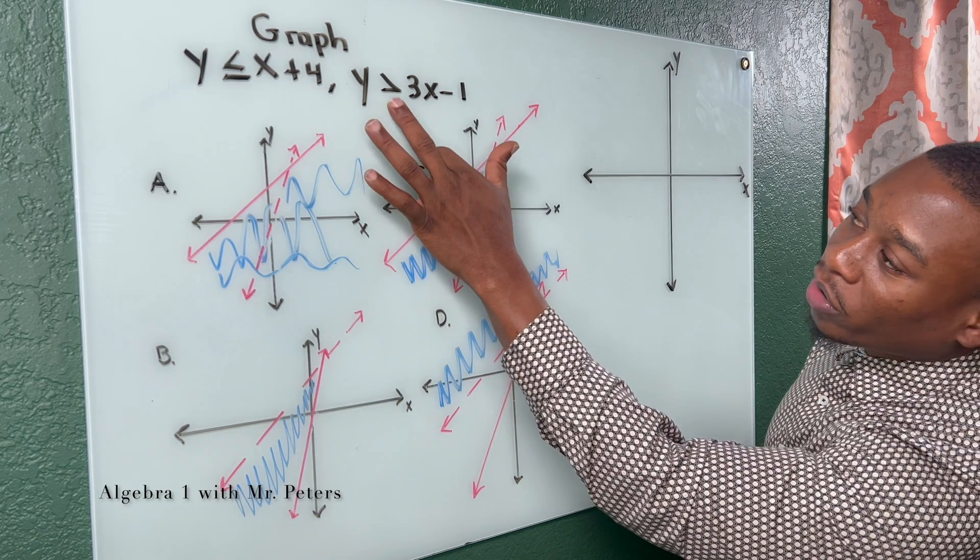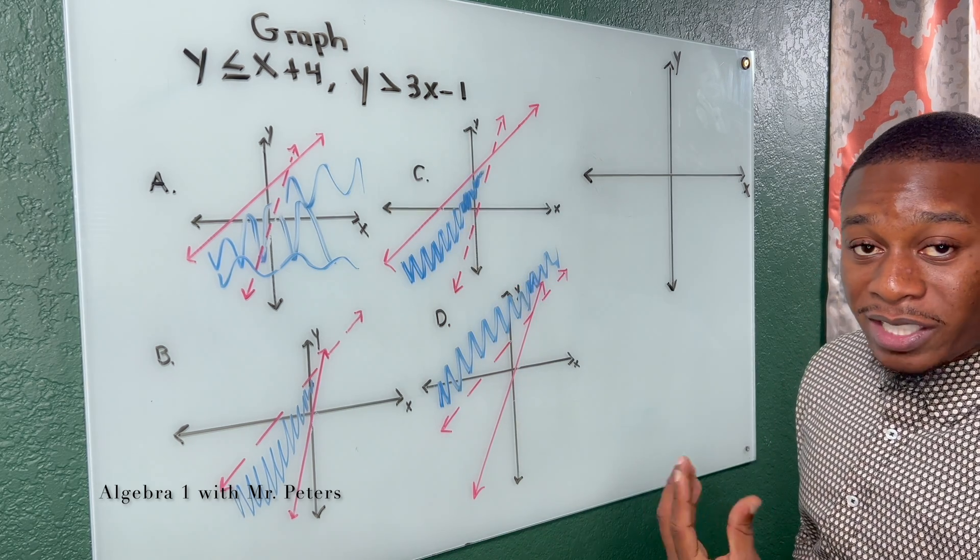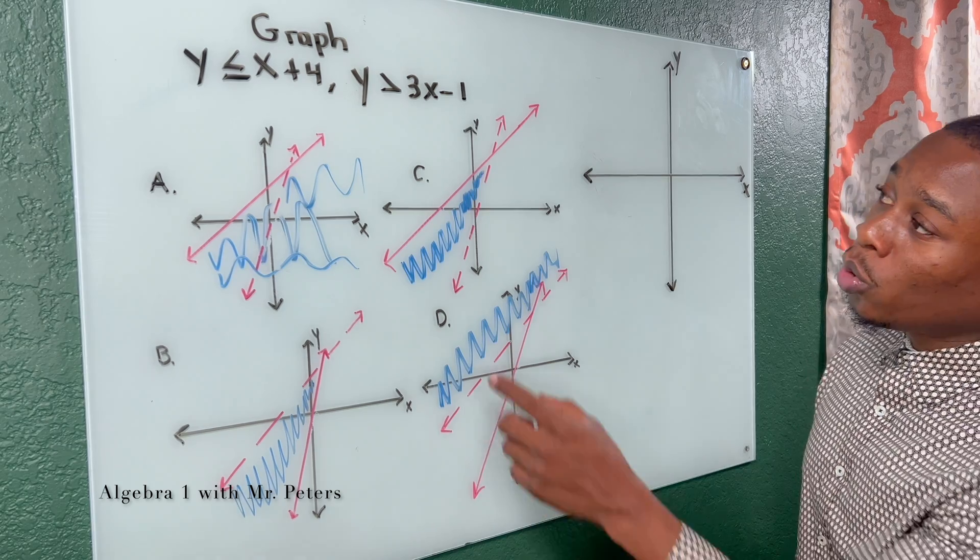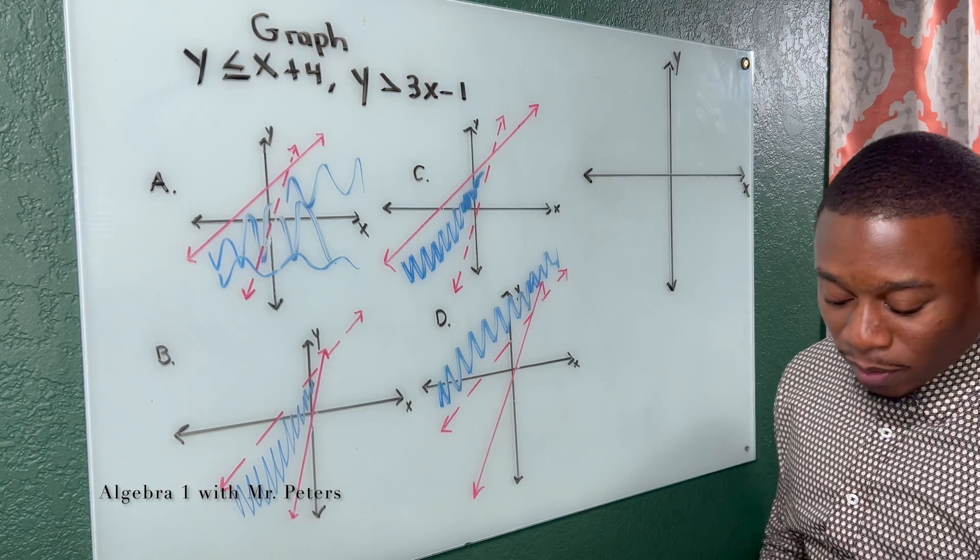So two things we need to know. One, because of the greater sign, it's going to be a dashed line. And two, the y-intercept should be negative 1.